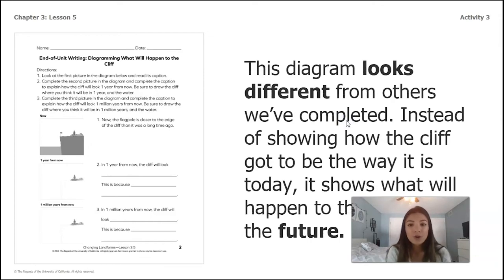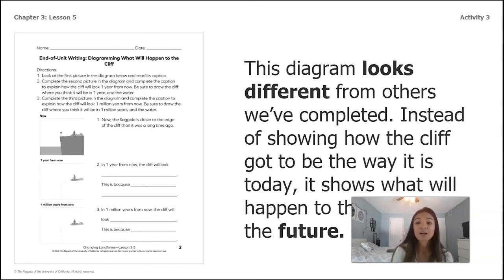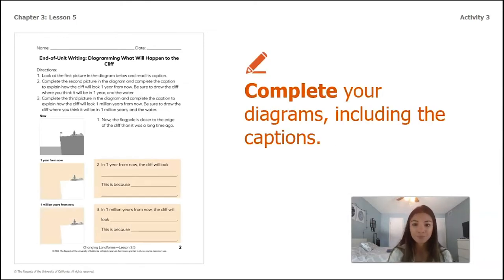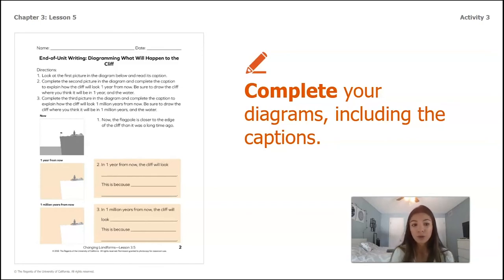This diagram looks different from the others we've completed. Instead of showing how the cliff got to be the way it is today, it shows what the cliff will look like in the future. We're not totally sure what it's going to look like — we're making a kind of a guess, but we're using information we've learned so far to help us make a more educated guess. Go ahead and pause this video and complete the diagrams and the captions on your own. If you're finished and you have someone at home you can share and talk it through with, do that before hopping back on the video.